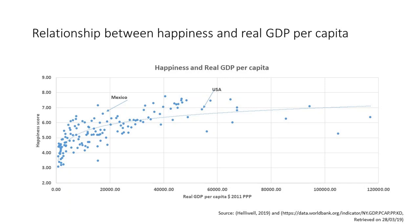However, once we go beyond a certain level of GDP per capita — around 20,000 US dollars per capita — the relationship seems to break down. The line of best fit becomes much, much flatter. It's a non-linear relationship between happiness and real GDP per capita. This is best exemplified by looking at the United States and Mexico. America has around three times the GDP per capita of Mexico, and yet the happiness scores are very, very similar.